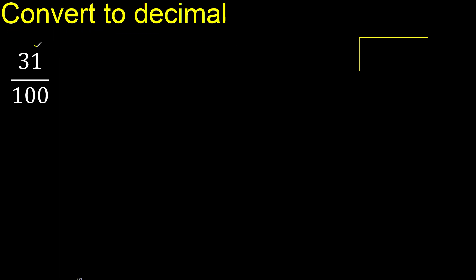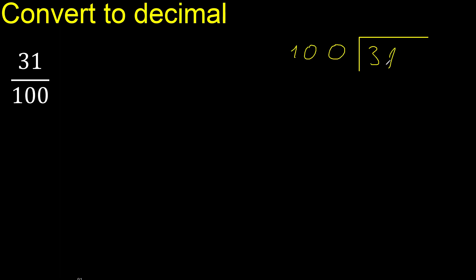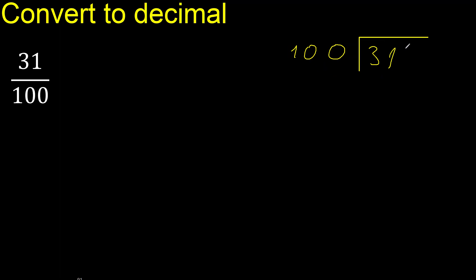31 divided by 100. 31 is less than 100, therefore complete with 0 here — 0 point.